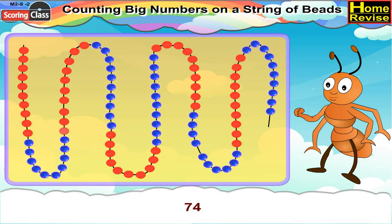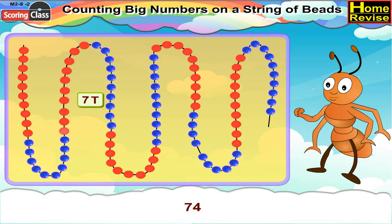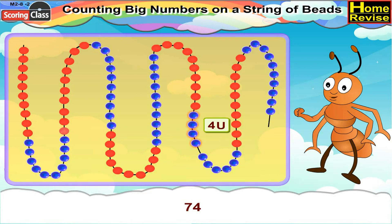Now, 74. For 74, first we will take 10 red beads, followed by 10 blue beads, then again 10 red beads, followed by 10 blue beads, then again 10 red beads, followed by 10 blue beads, and again 10 red beads — so we get 7 tens. Now, we will add 4 more blue beads to it and place the clip after the 4 blue beads and we get 74.